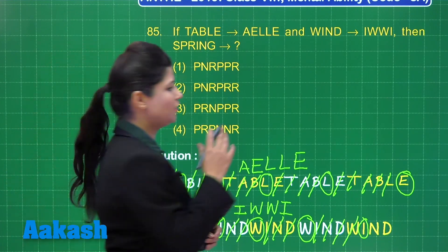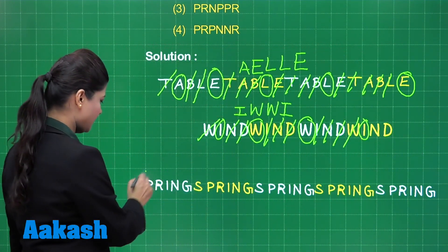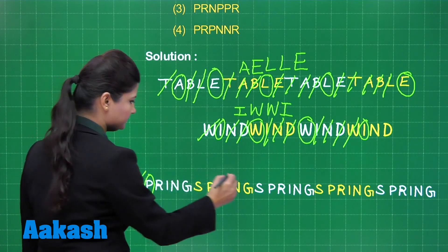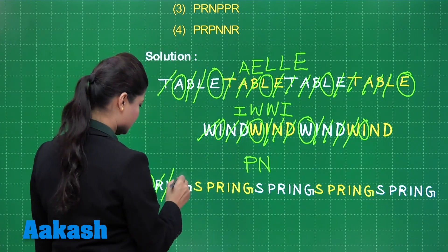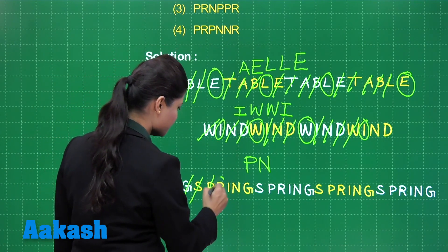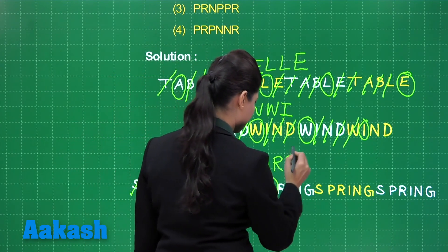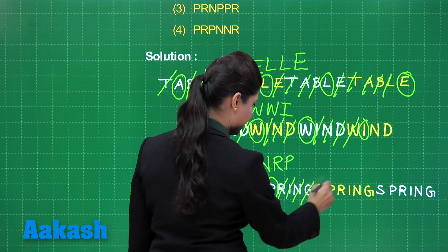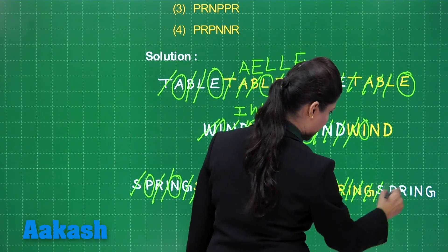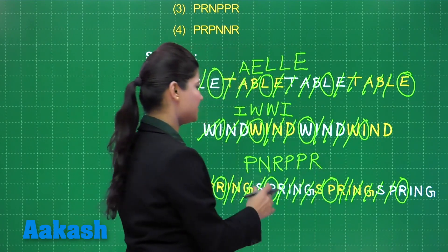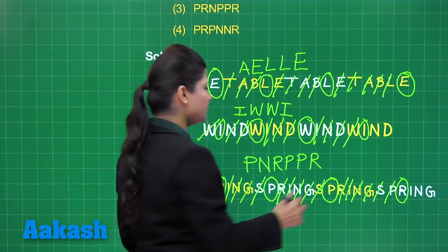In similar manner, let us write 'spring' followed by 'spring' itself in series. When you leave the first alphabet, you reach P. Leaving two alphabets, you reach N. Leaving three alphabets, you reach R. Leaving four alphabets, you reach P. Leaving five alphabets, you again reach P. Leaving six alphabets, you reach R. 'Spring' is a six-lettered word, so the required coding is PNRPPR.